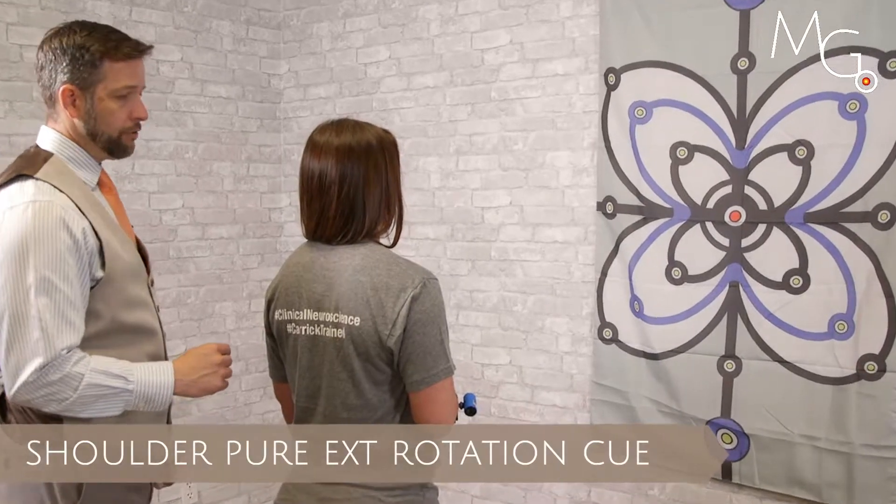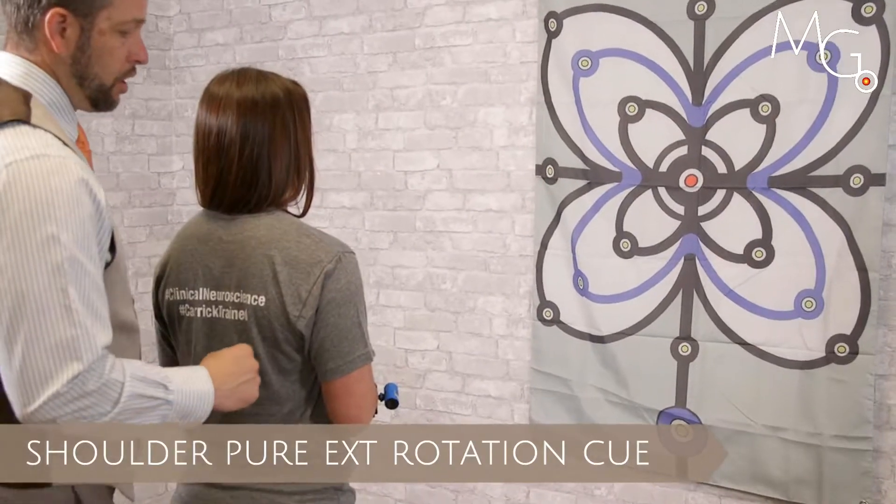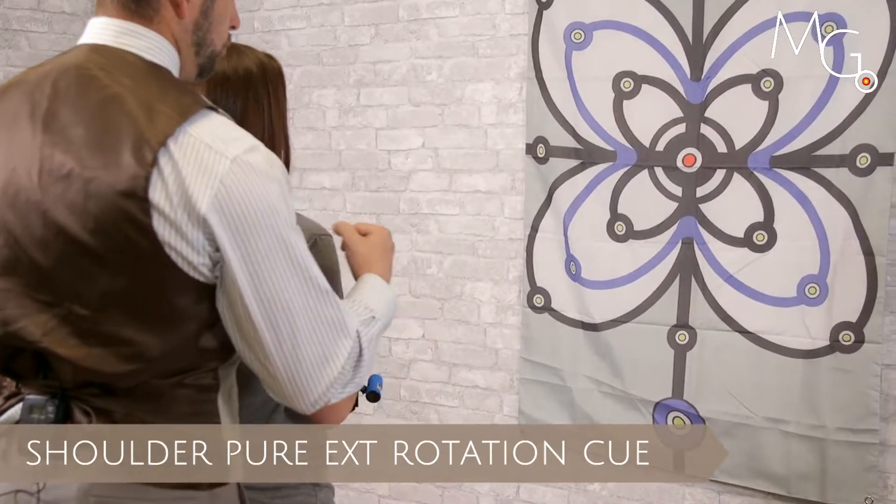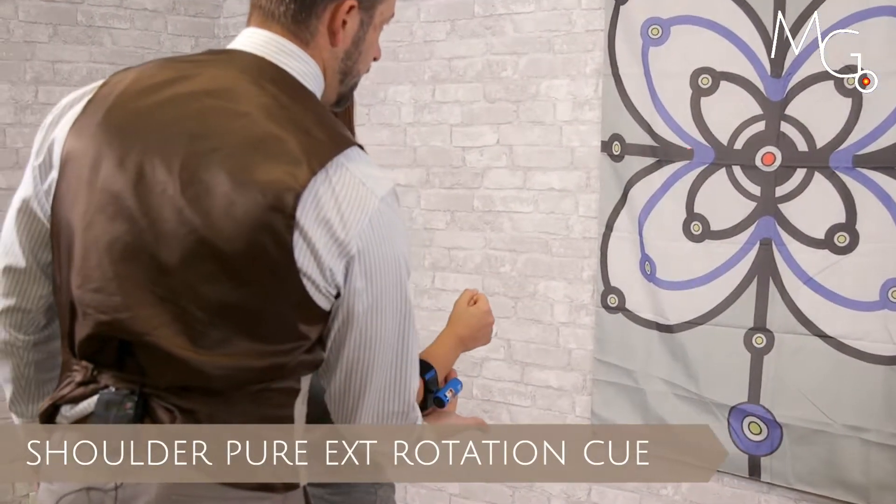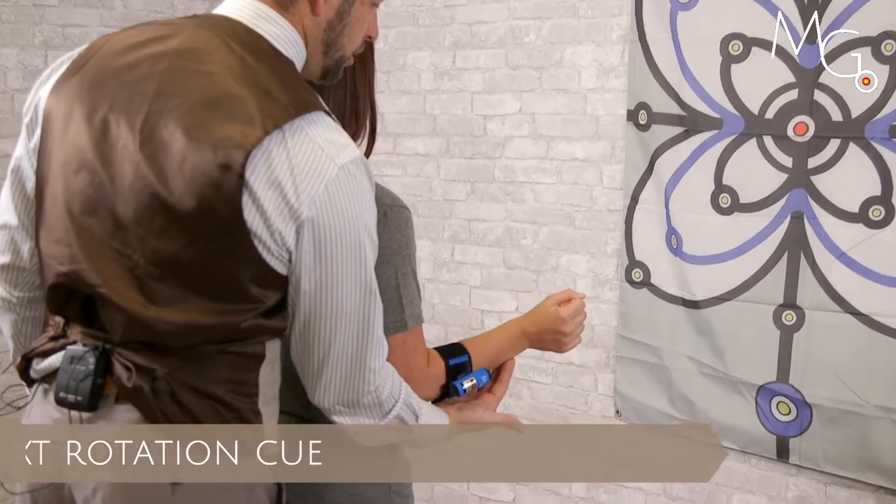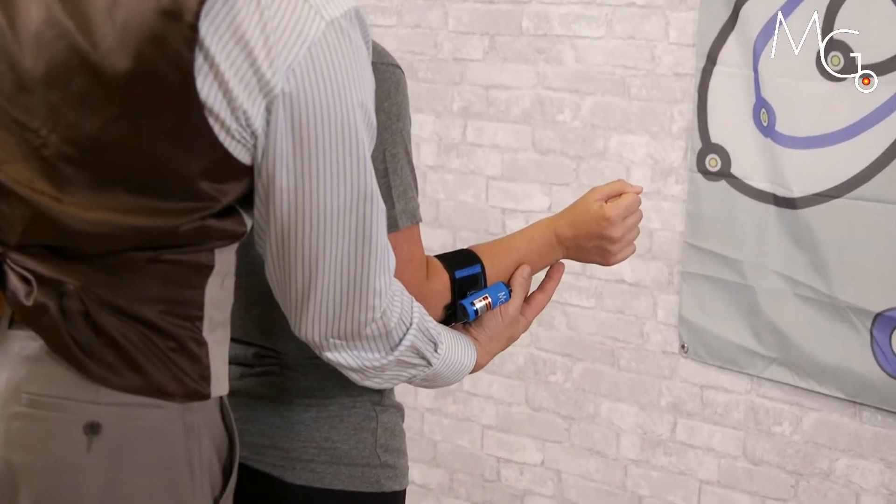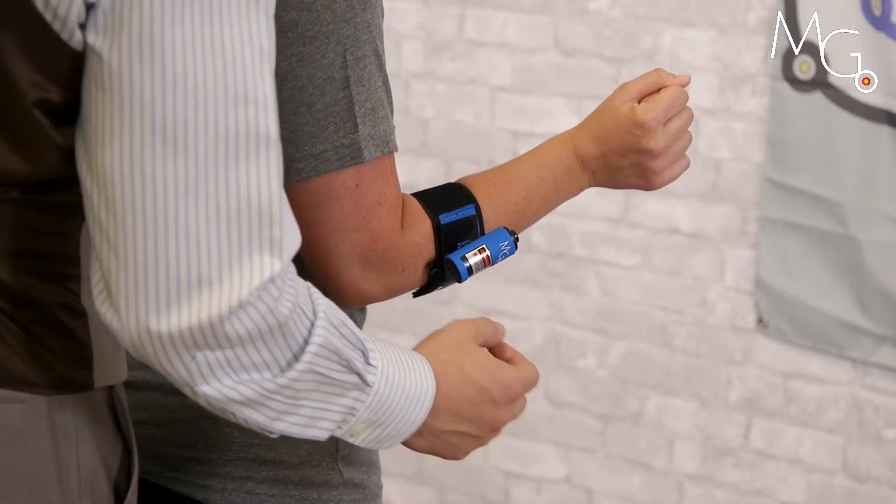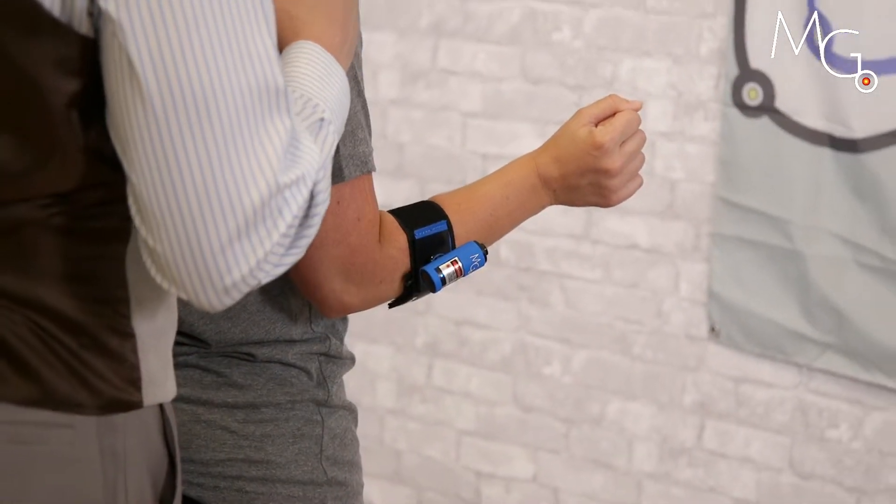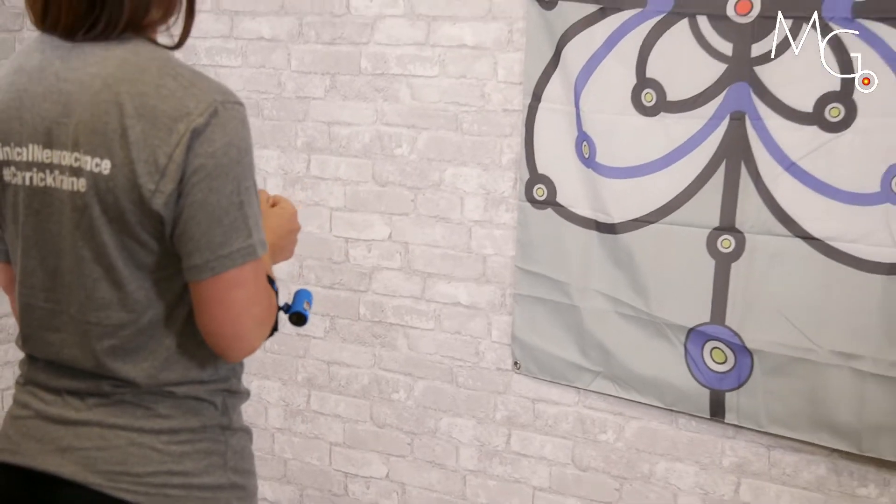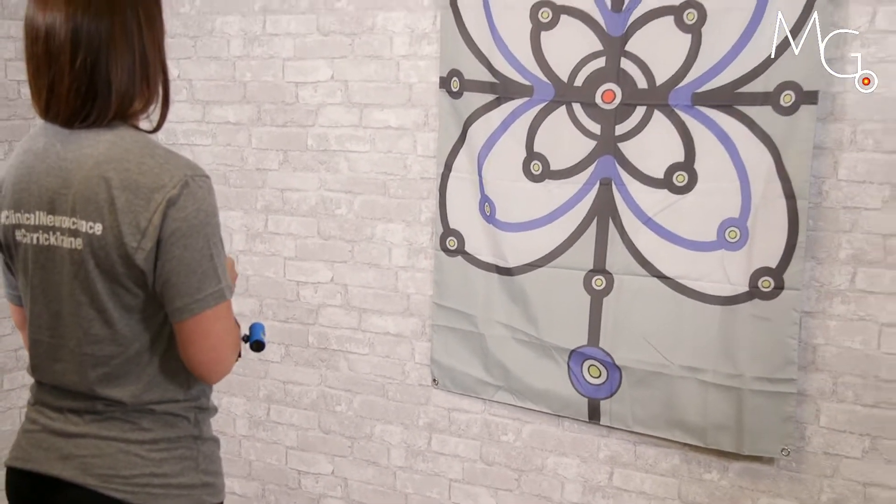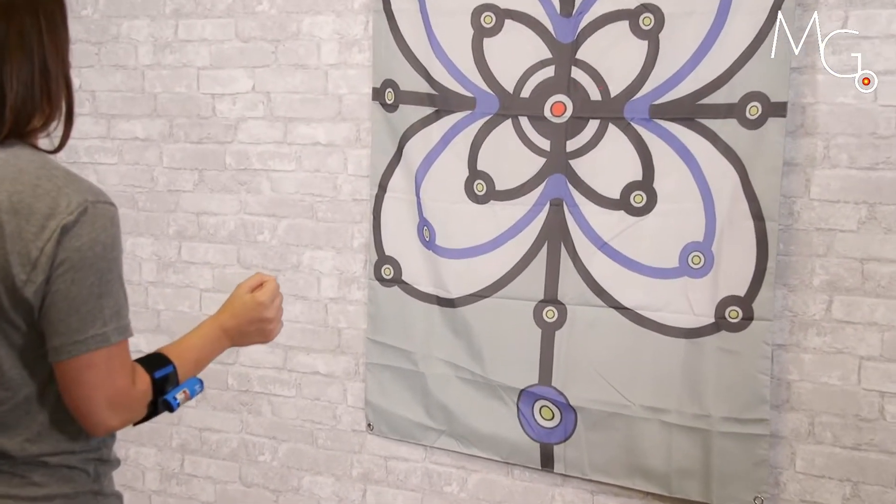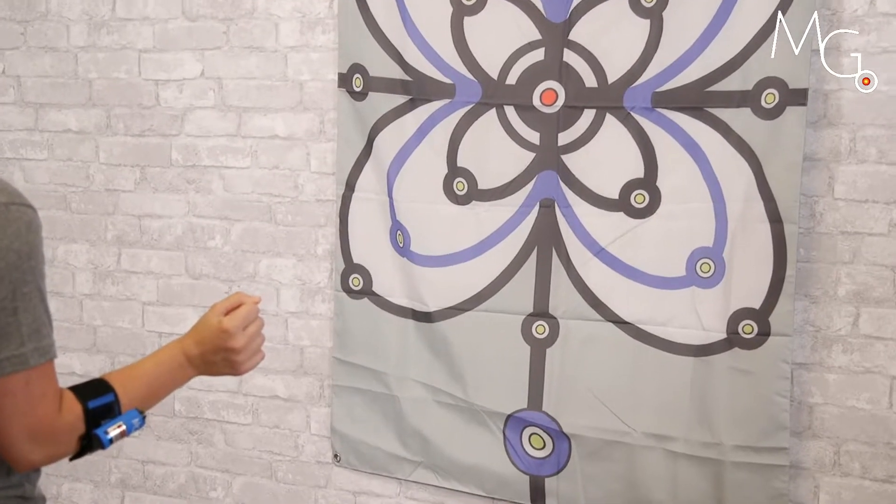For assessing pure external rotation at the shoulder in a fully adducted position, we can have the patient rotate or be positioned into pure external rotation, which is without shoulder extension. So I want that laser to be above a horizontal line, and then have them return and recreate that pure external rotation by staying at or above the horizontal line on the target.